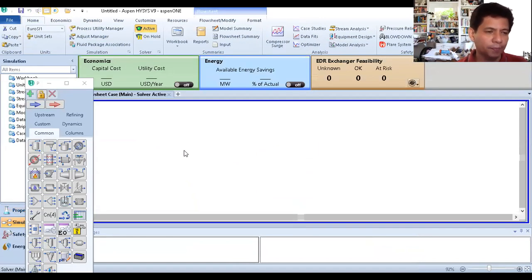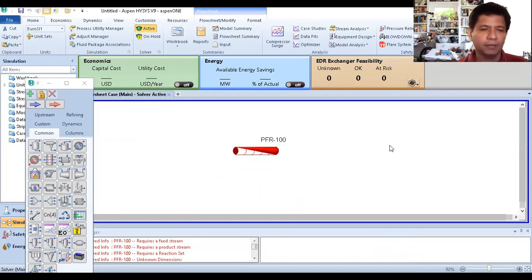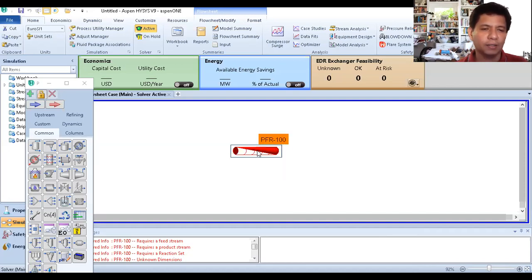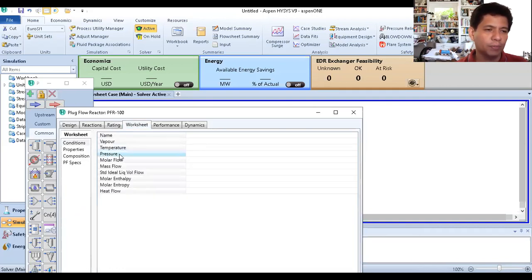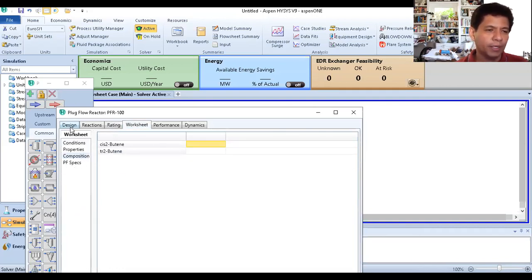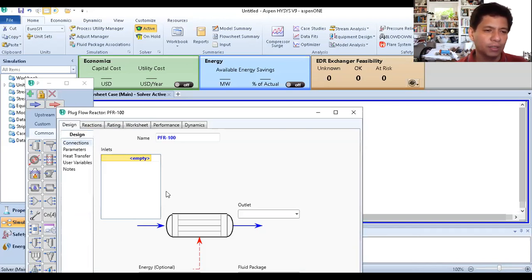Enter the simulation part. Then drag a PFR. This is the PFR. When you hover over it, it says plug flow reactor. Drag it to the center, click in the white area. Then double-click here to enter our data. First, we'll go to worksheet - actually, design first. Connections. For connections, so you don't get tired, I suggest just using one as the stream name. One for the feed, and two for the product, so you don't have to think. Now go to worksheet.